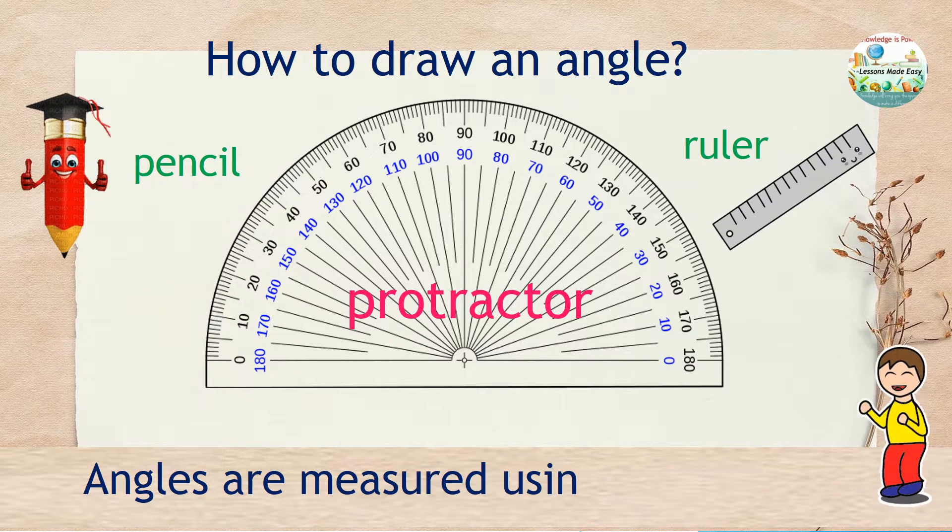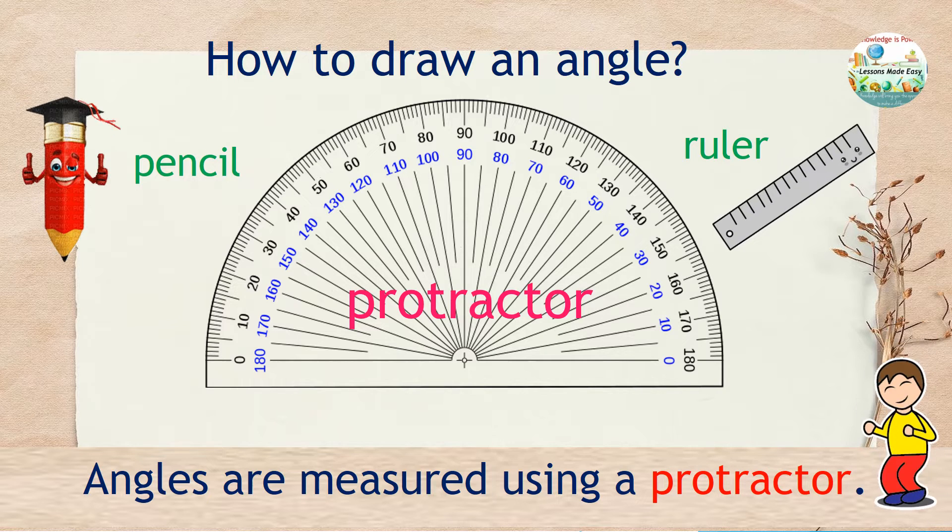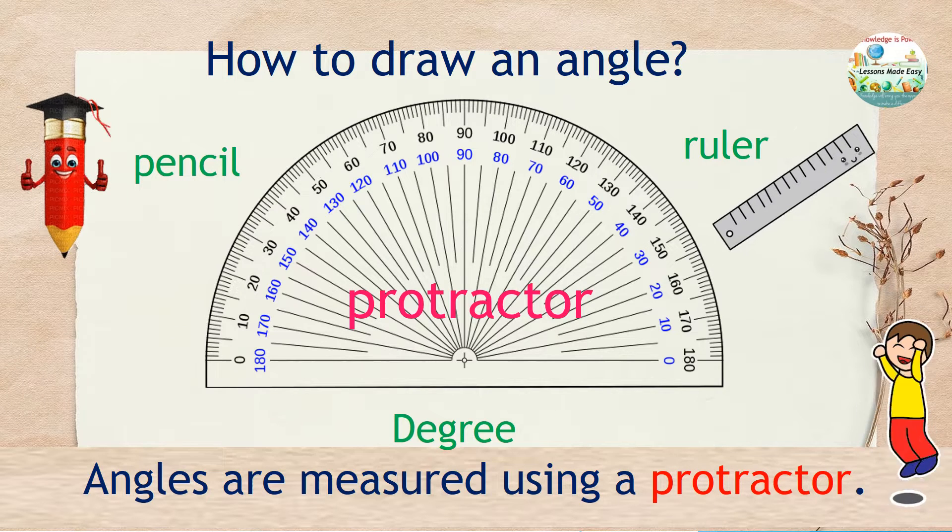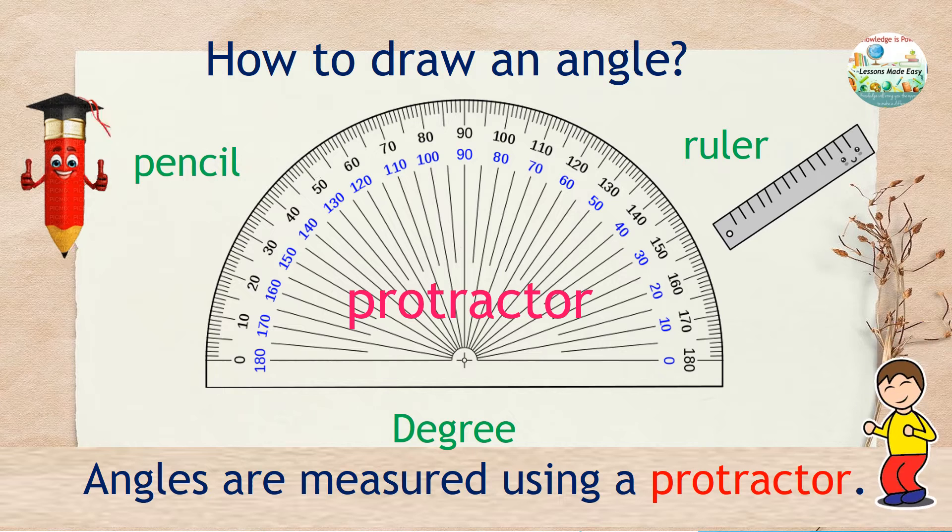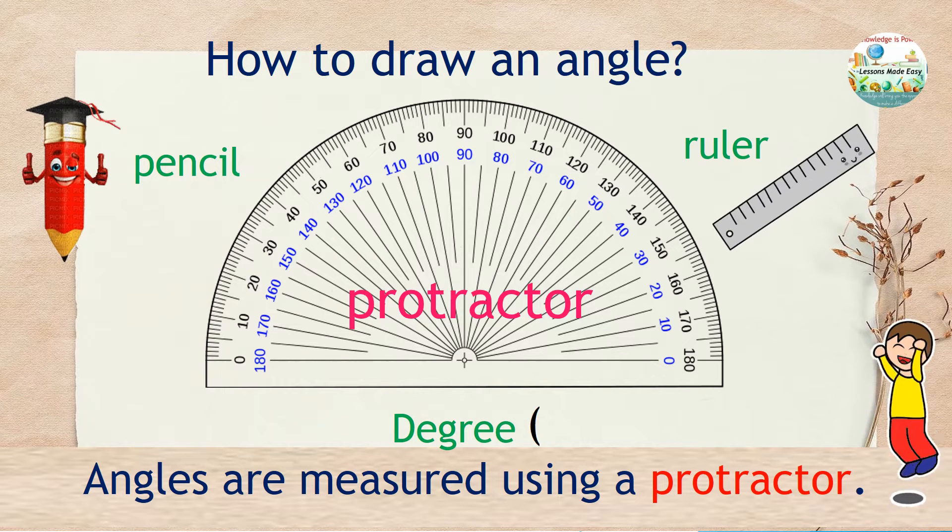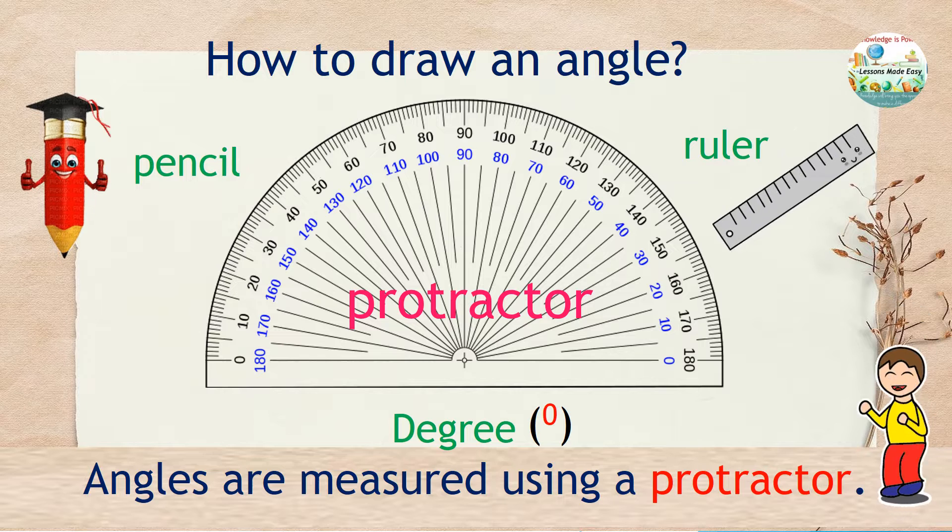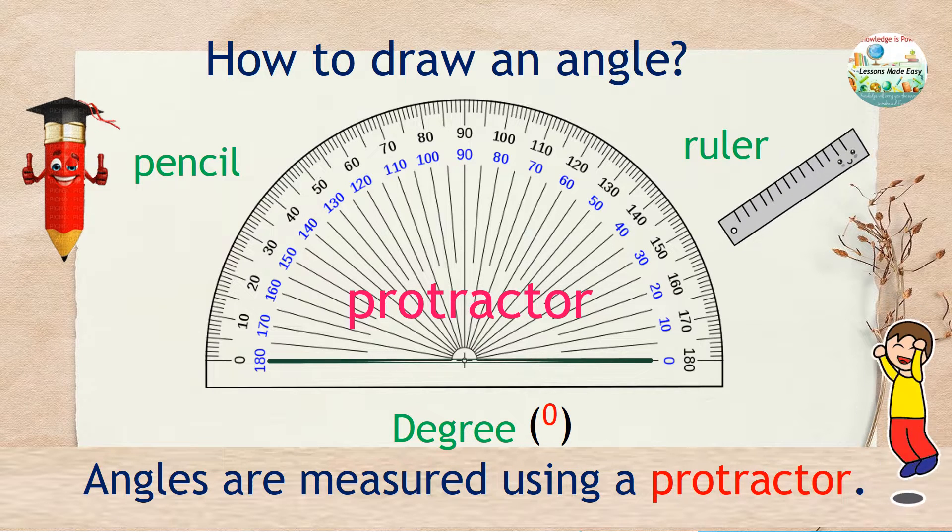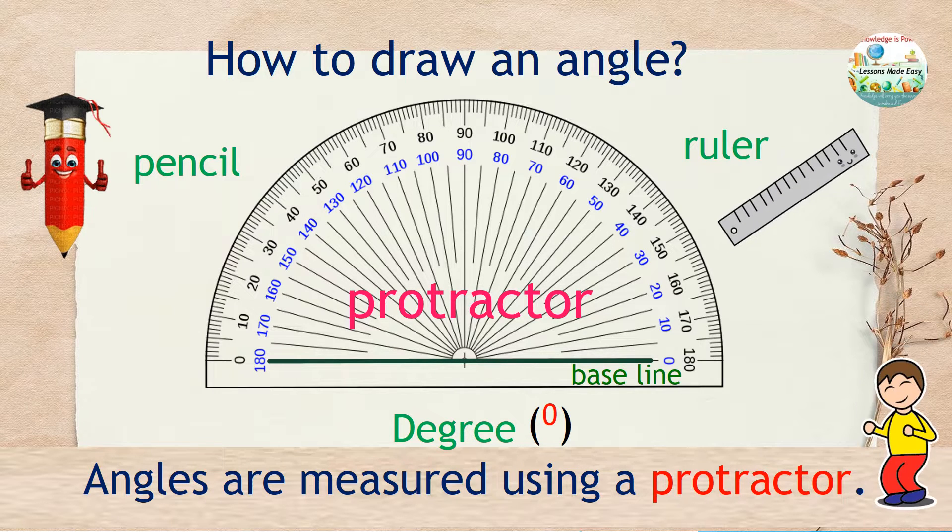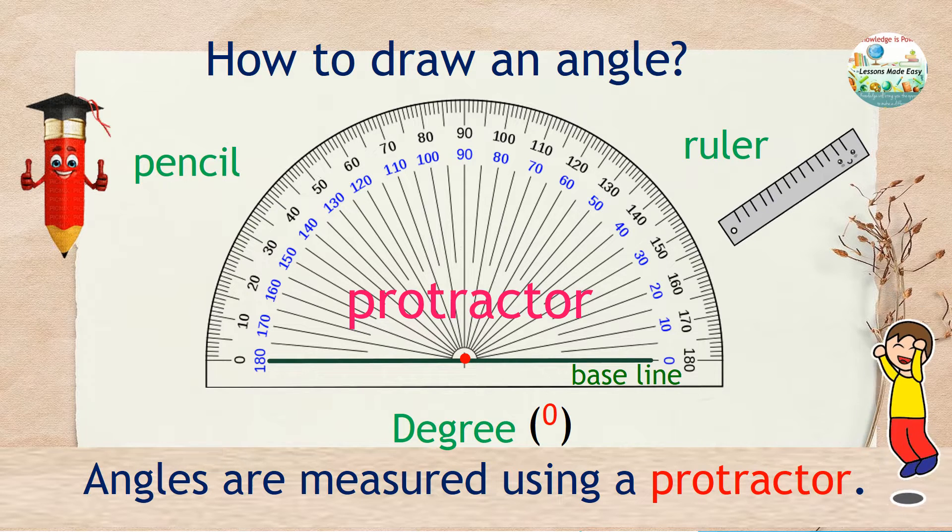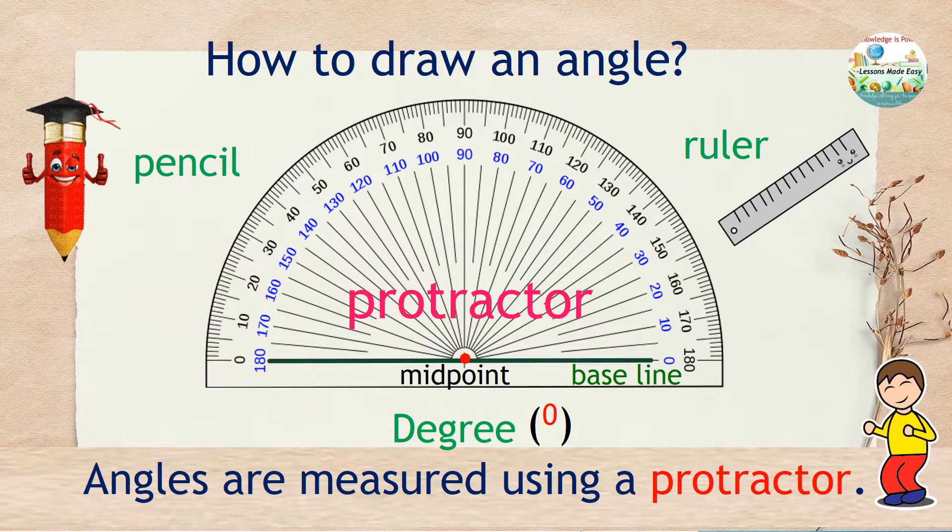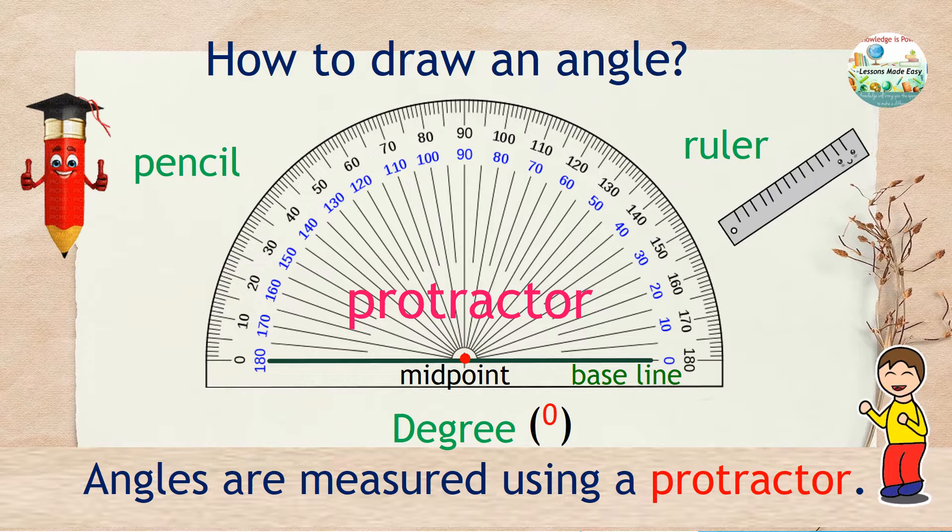Angles are measured using a protractor with a unit called degree. The degree symbol is a small superscript circle like this one. Look closely at the given protractor. This horizontal line is called the baseline. In the middle of the baseline is the midpoint. There are two scales in a protractor.